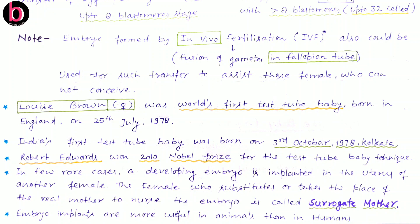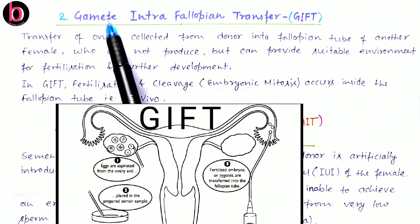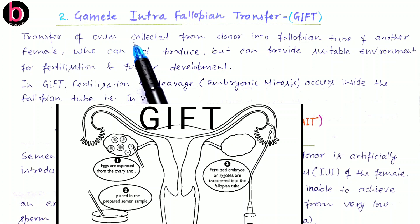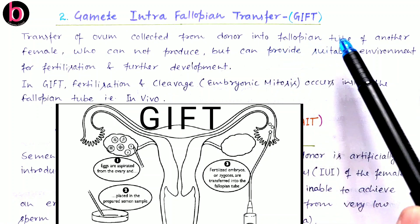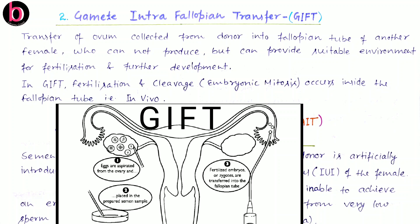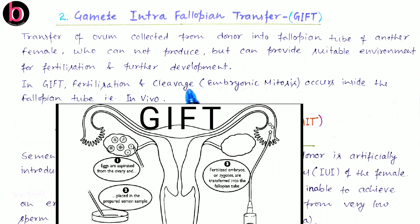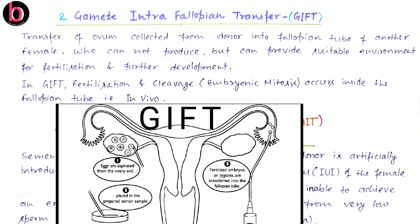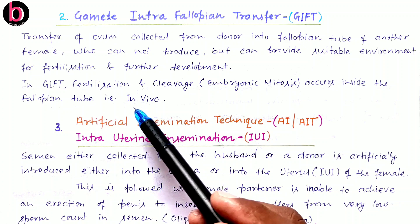The second ART technique is Gamete Intra Fallopian Transfer or GIFT. In this process, an ovum collected from a donor is transferred into the fallopian tube of another female who cannot produce eggs but can provide a suitable environment for fertilization and further development. This technique is suitable for females who are unable to produce ova. In GIFT, fertilization and cleavage (embryonic mitosis) all occur inside the fallopian tube and subsequently in the uterus, making this an in vivo fertilization.